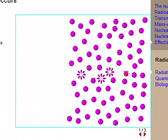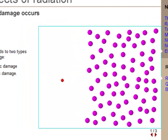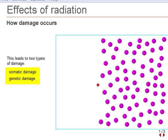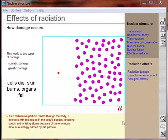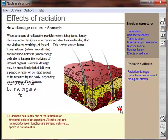When a stream of radioactive particles enters living tissue, it may damage molecules such as enzymes and structural molecules that are vital to the workings of a cell. The skin cells can die, and this is what causes radiation burns. When so many cells die, the working of internal organs are hampered, and this is the cause of radiation sickness.